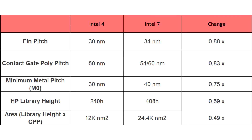Intel 4 Process Node Detailed: Doubling Density with 20% Higher Performance. Intel's semiconductor nodes have been quite controversial with the arrival of the 10nm design. Years in the making, the node got delayed multiple times, and only recently did the general public get the first 10nm chips. Today, at IEEE's annual VLSI Symposium, we get more details about Intel's upcoming node, called Intel 4.